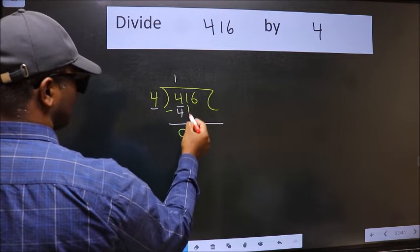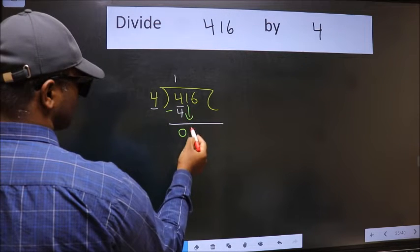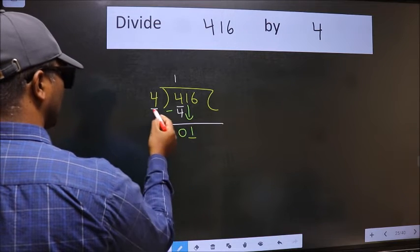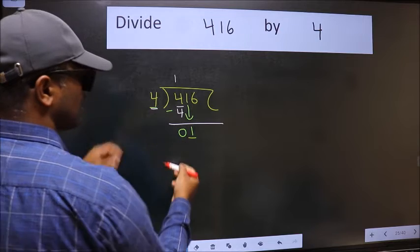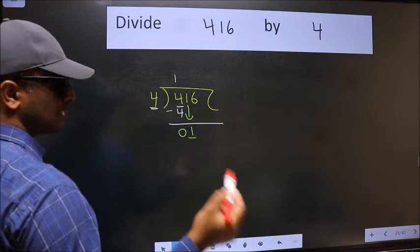After this, bring down the number beside it. So 1 down. Now here we have 1 and here 4. 1 is smaller than 4, so we should bring down the second number.